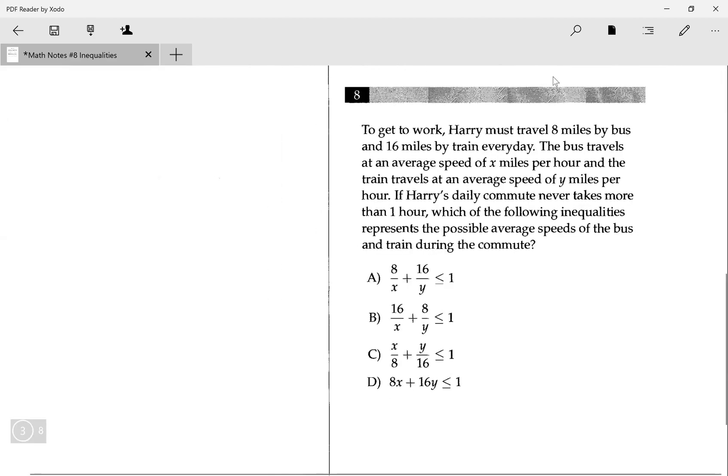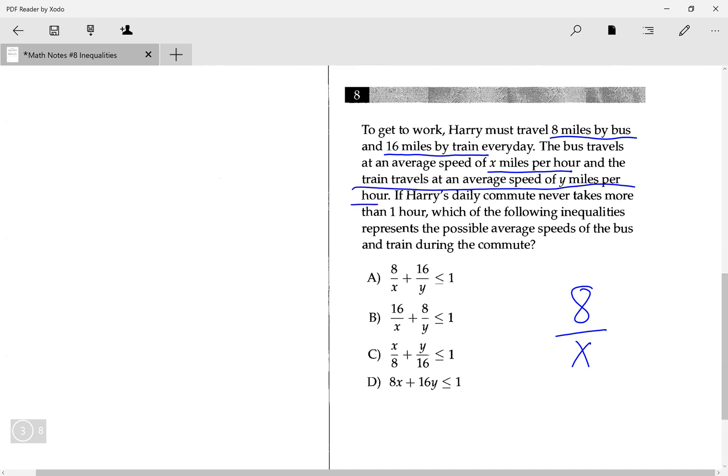Number 8: To get to work, Harry must travel 8 miles by bus and 16 miles by train every day. The bus travels at an average speed of x miles per hour. So I have 8 miles, but it goes by x miles per hour. If I want to find how many hours, I would divide by x because miles over miles per hour gives you hours. The train travels at average speed of y miles per hour, so that's 16 over y. He does both of these in his hourly commute.